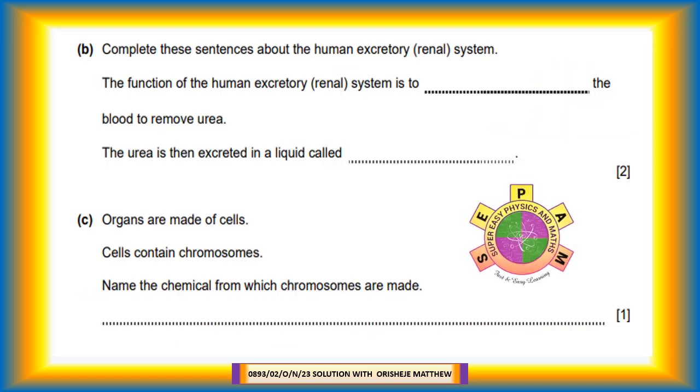Question 1b: Complete these sentences about the human excretory renal system. The function of the human excretory renal system is to filter the blood to remove urea. The urea is then excreted in a liquid called urine.